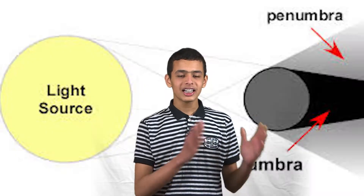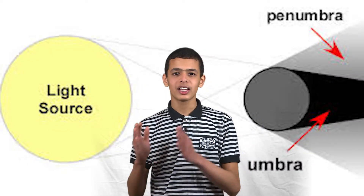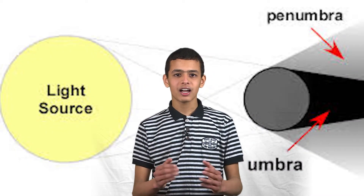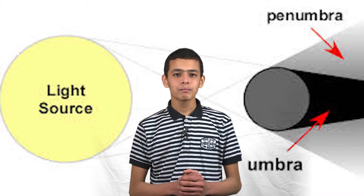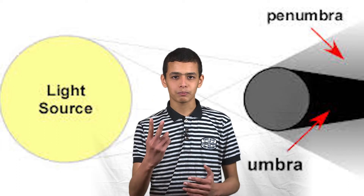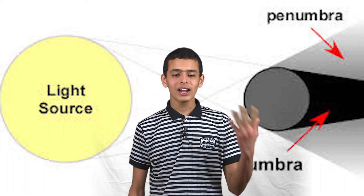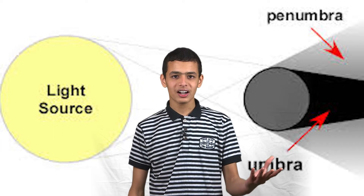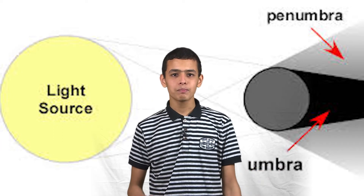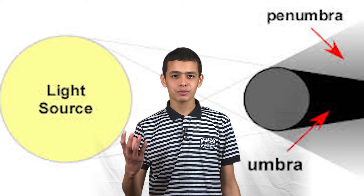Undoubtedly, the sun is a source of light. It shines on Earth, creating a shadow, which can be divided into at least two main parts. The umbra is the dark inner part, while the penumbra is the fainter outer one.